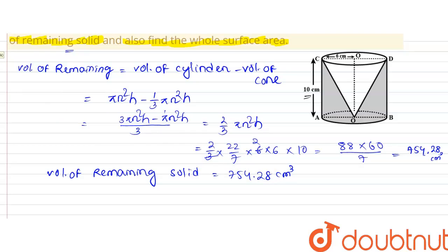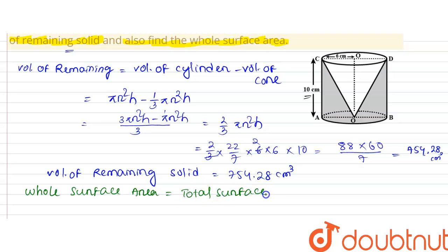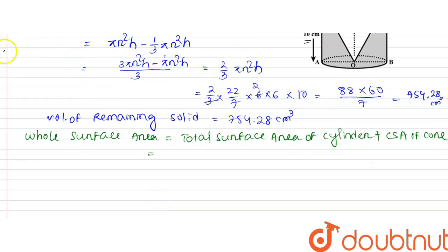Now I will calculate the whole surface area. Whole surface area = Total surface area of cylinder + Curved surface area (CSA) of cone. The formula for total surface area of the cylinder is 2π r(r + h), and the curved surface area of the cone is π r l, where l is the slant height.